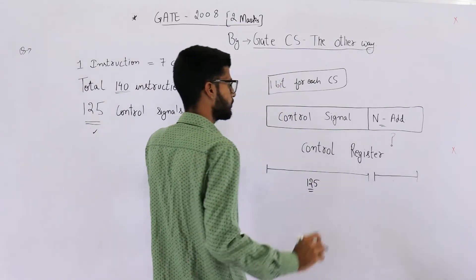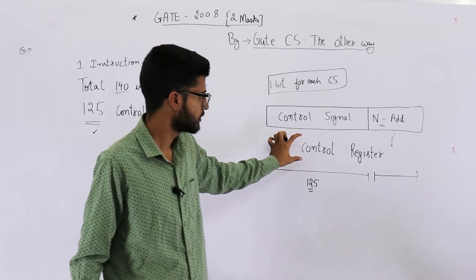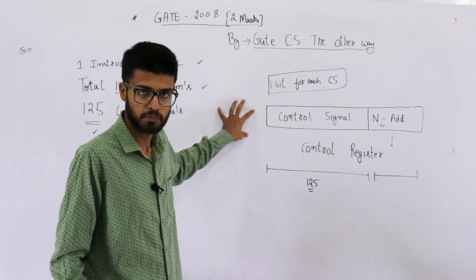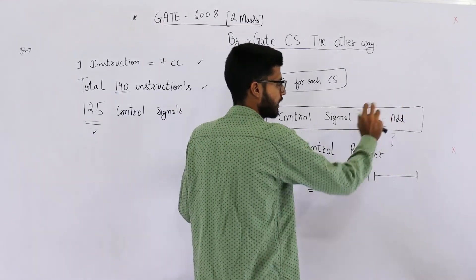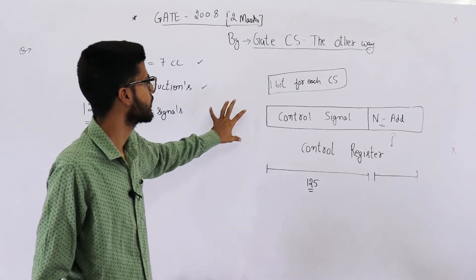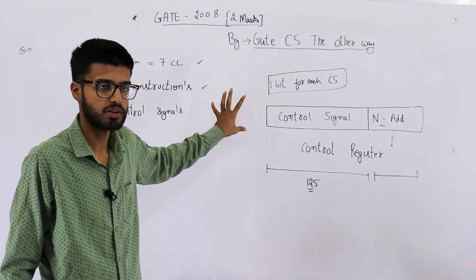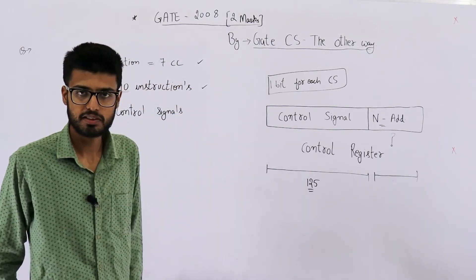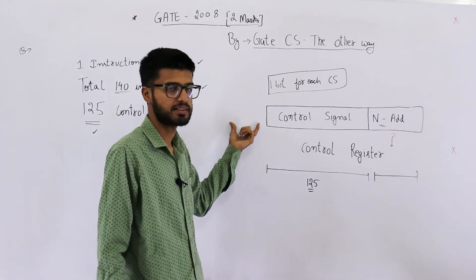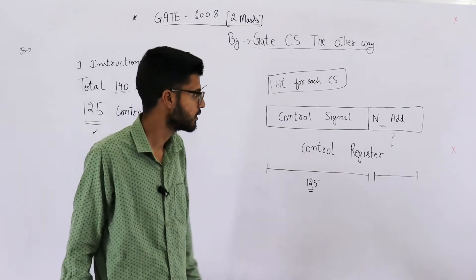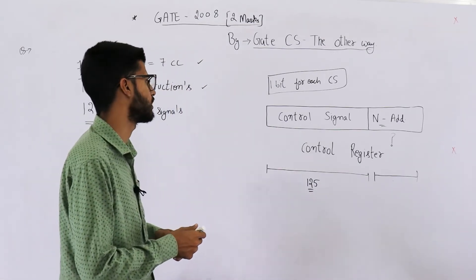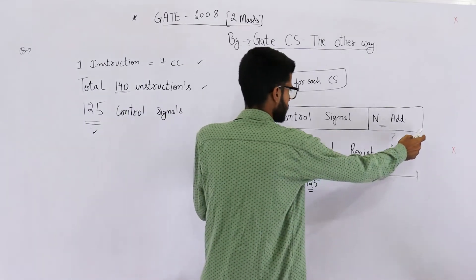So we need to reserve 125 bits in total. That means the control signal is going to be of 125 bits. By the way, the control register generally has three parts: condition bits, then the control signal, then next address. But from the question it's very clear that we can skip this condition bits or condition part because they haven't specified anything. We are not given any hint about how many bits is this condition part, so you can safely skip it.